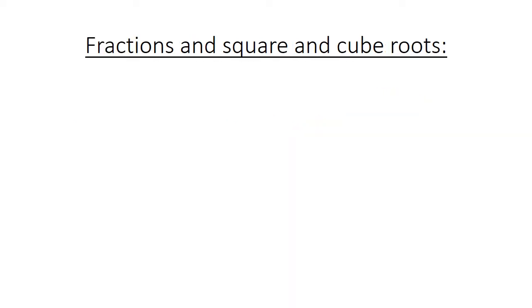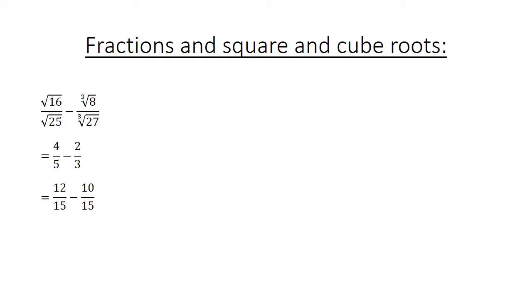Fractions with square and cube roots: the square root of 16 over the square root of 25 minus the cube root of 8 over the cube root of 27 equals 4 over 5 minus 2 over 3. Remember to find the lowest common multiple: 12 over 15 minus 10 over 15 equals 2 over 15.